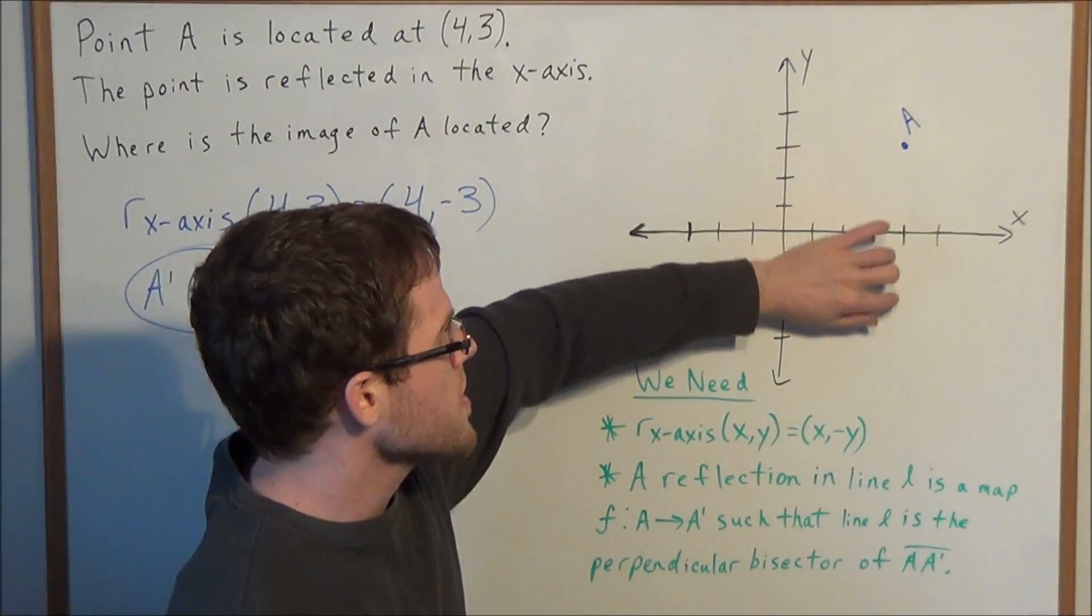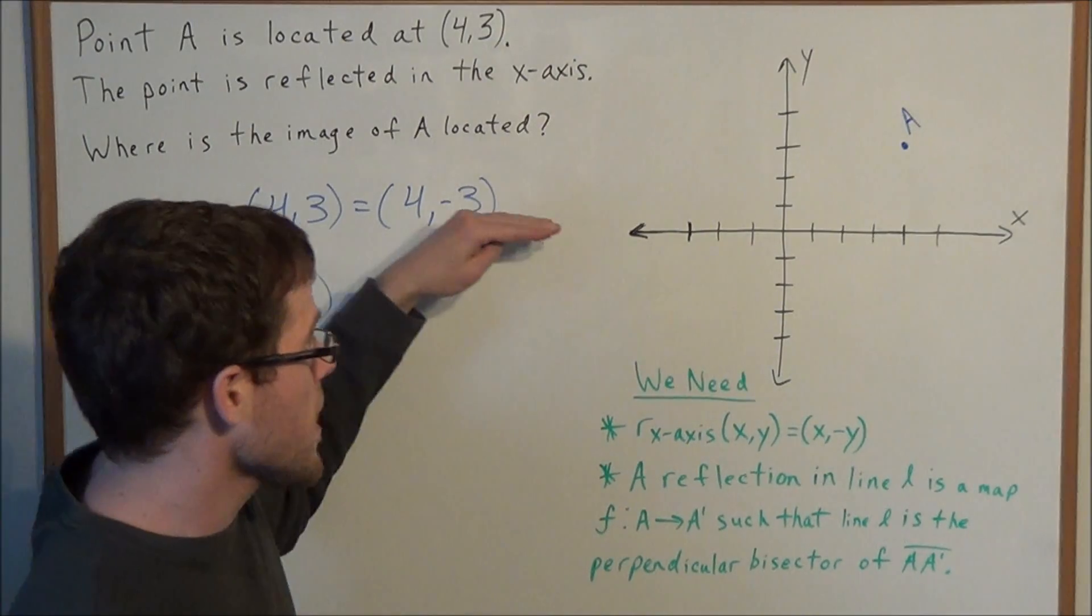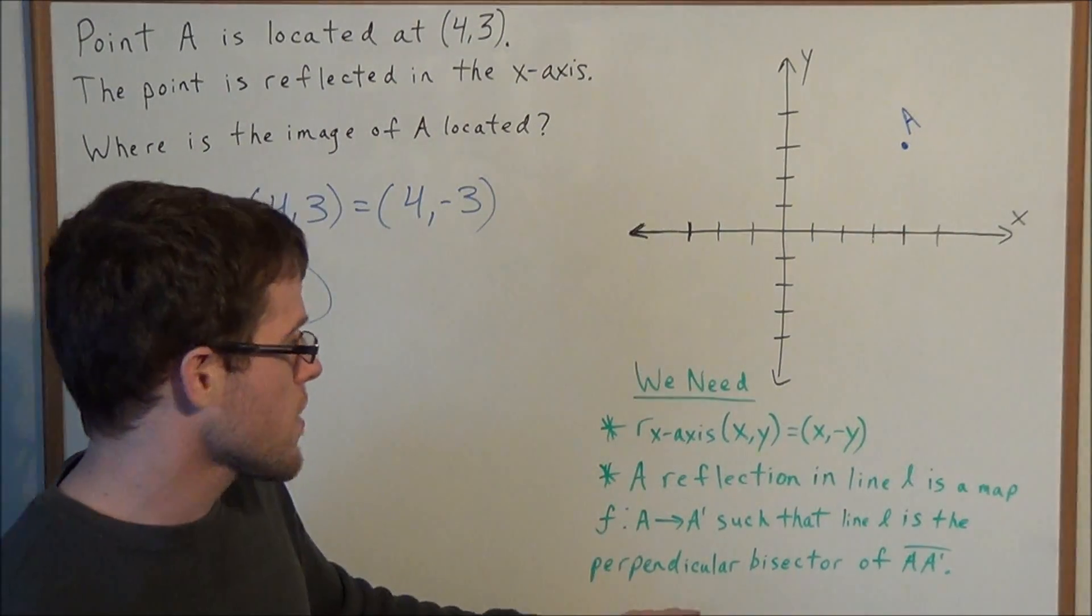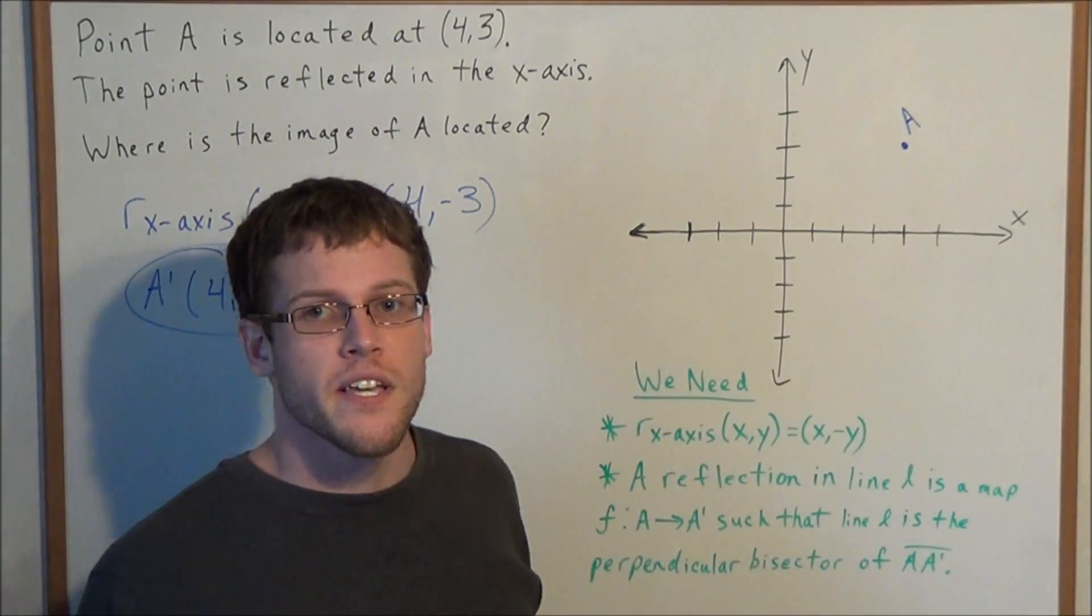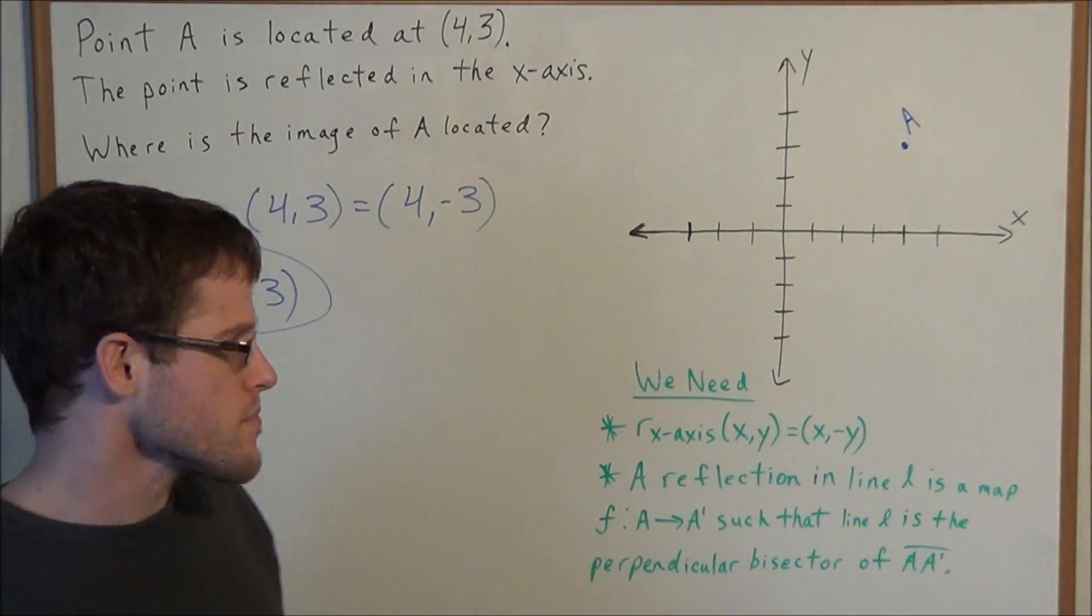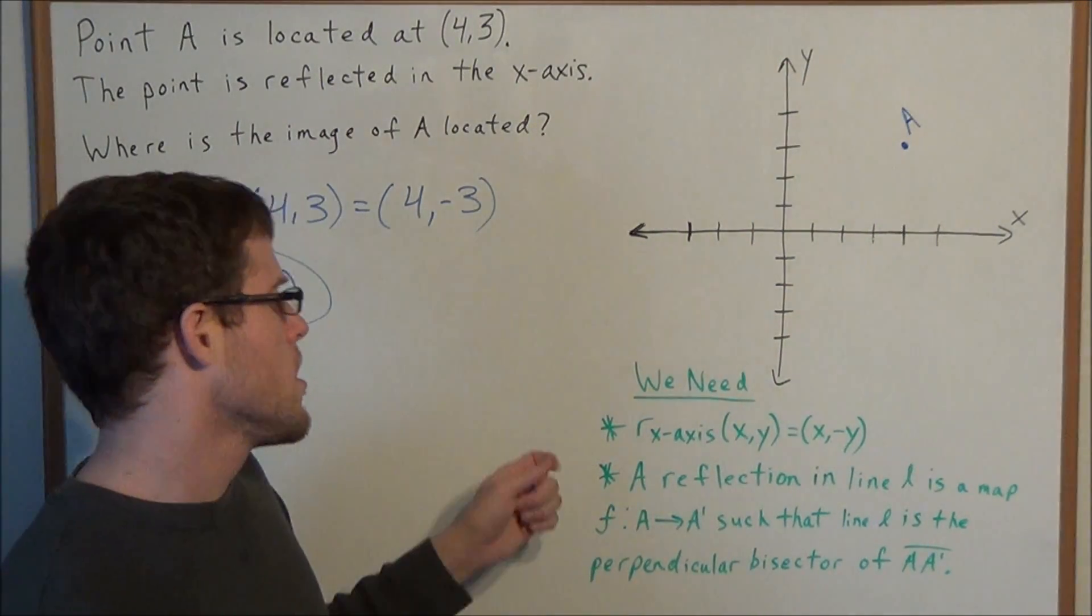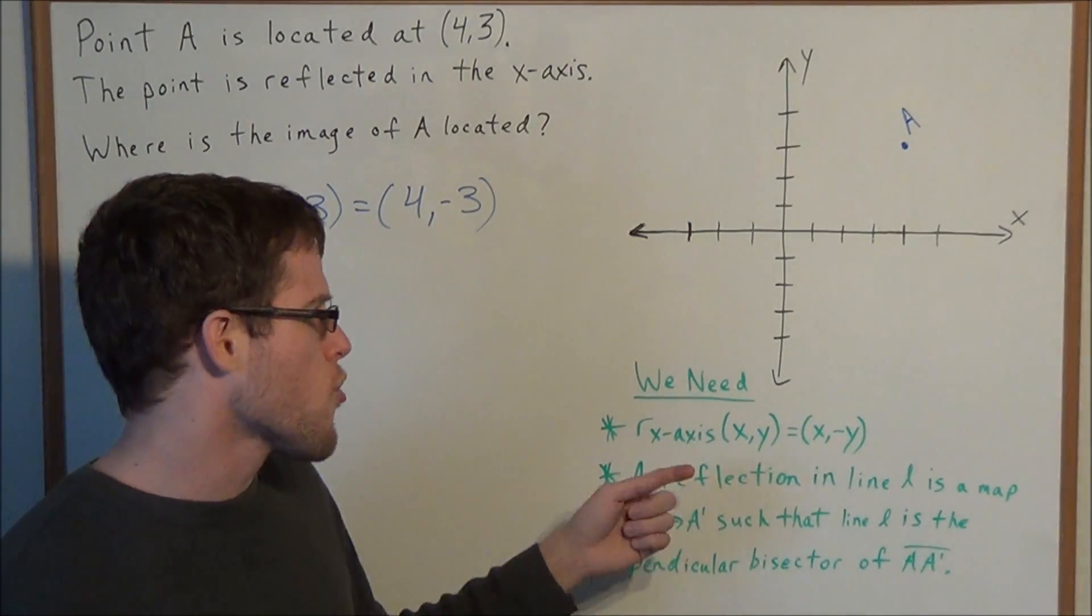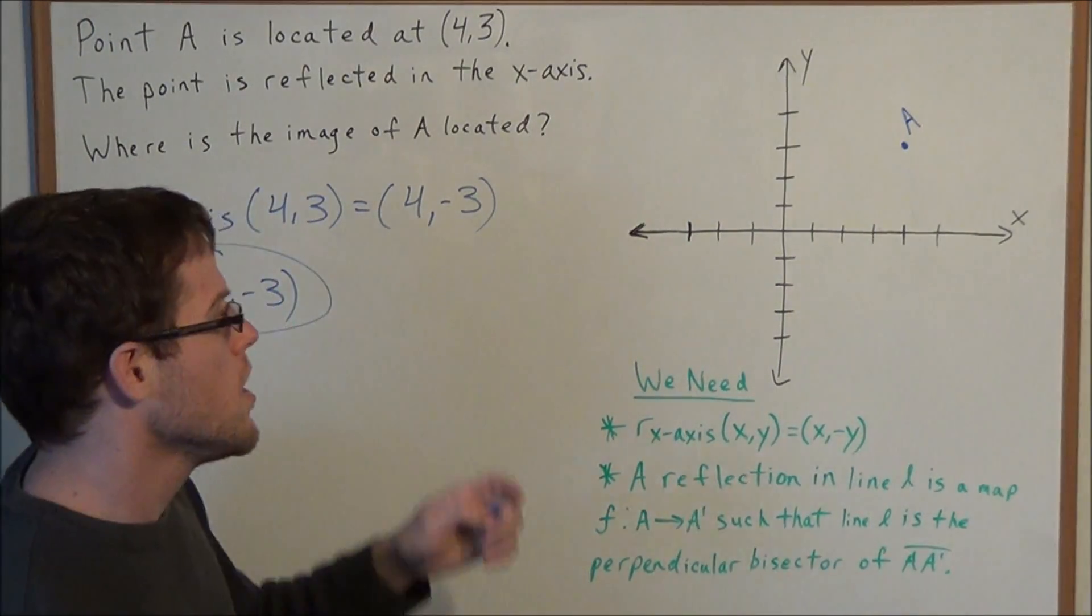A prime is the image of A. So the x-axis, according to this definition, needs to be the perpendicular bisector of line segment AA prime. Now how does this help us remember the equation for a reflection in the x-axis?